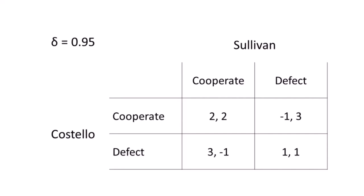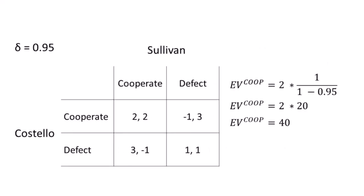This is the payoff matrix for our game. We have Costello and Sullivan, who both can choose to cooperate or defect. The discount factor is 0.95, as the two have been very close for years. Both have a dominant strategy to defect, but we know that they will end up getting nothing. To remedy this, they can cooperate — however, we need to calculate whether cooperation is actually sustainable.